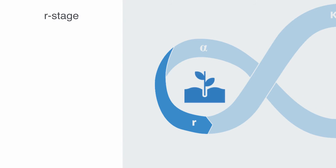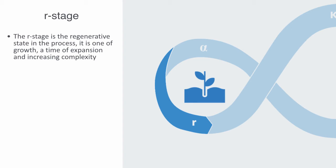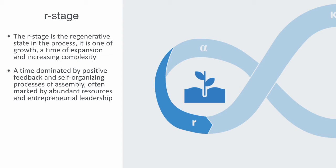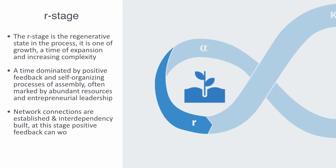The R stage is the regenerative stage in the process — it is one of growth, a time of expansion and increased complexity. A system in the R stage has successfully reorientated post-crisis, and there is now plenty of freely available resources for rapid growth and development. It is a time dominated by positive feedback and self-organizing processes of assembly, often marked by abundant resources and entrepreneurial leadership. Once kick-started along a growth trajectory, many resource flows are available for experimentation. Network connections are established and interdependencies are built. Positive feedback can work to take hold of some emergent pattern and rapidly scale it up, as might be seen in the exponential growth of a startup company riding the positive feedback loop of economics of scale.